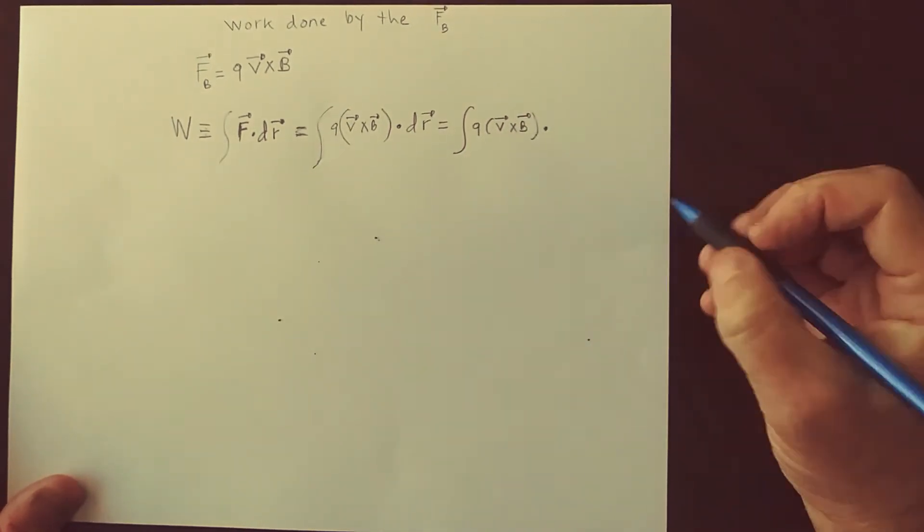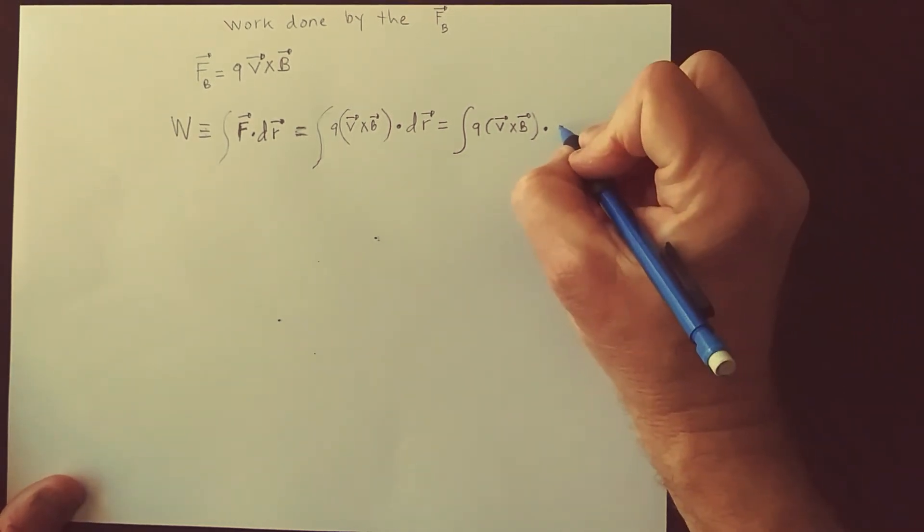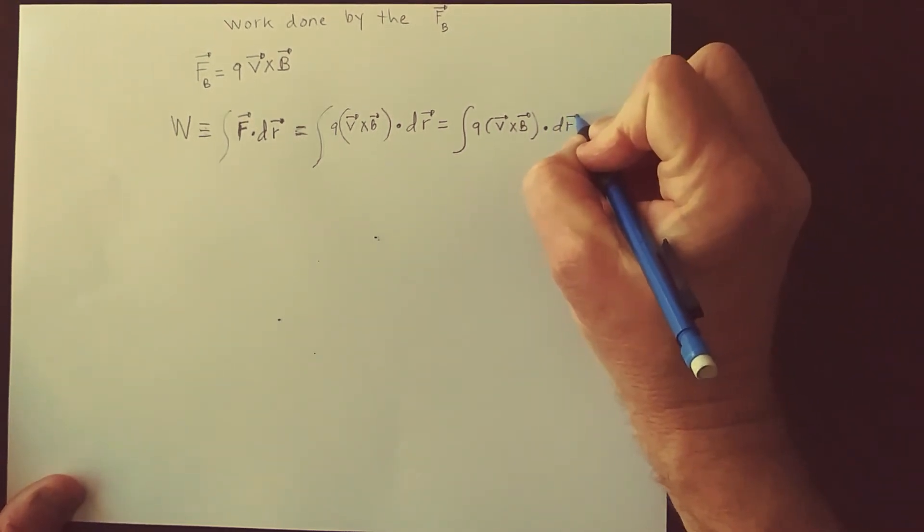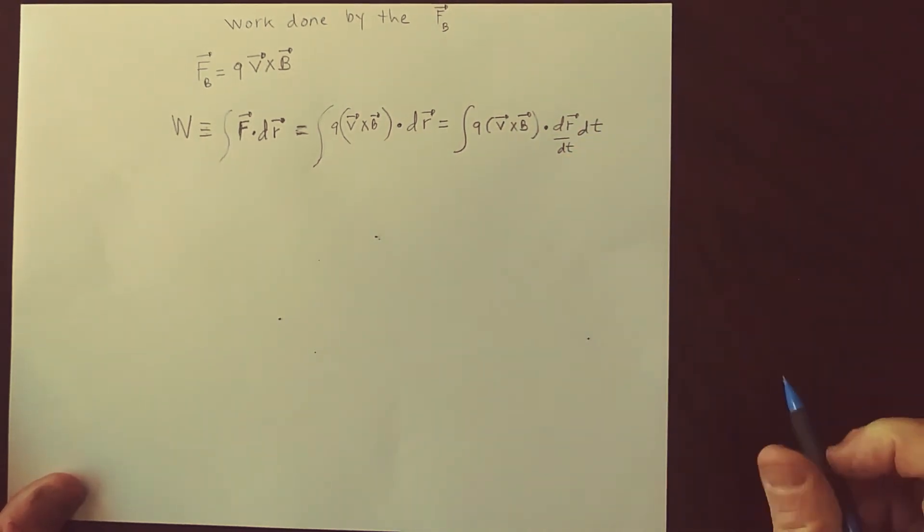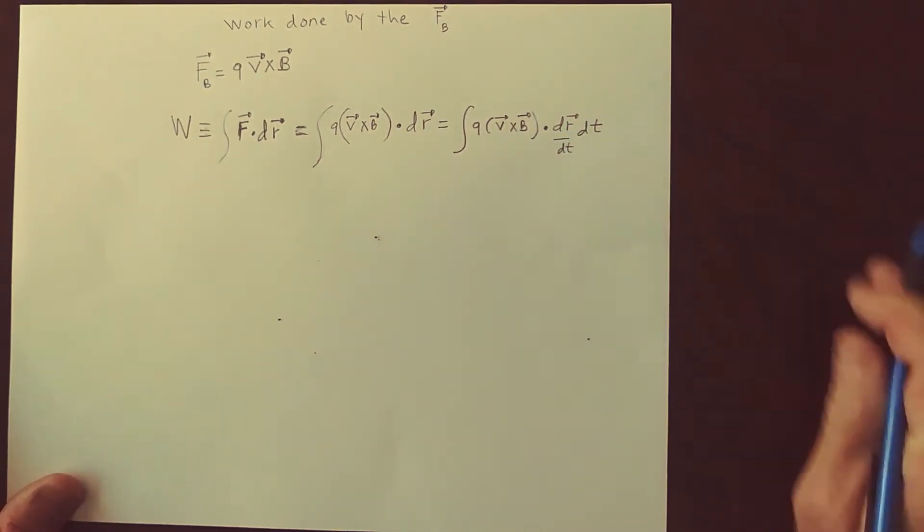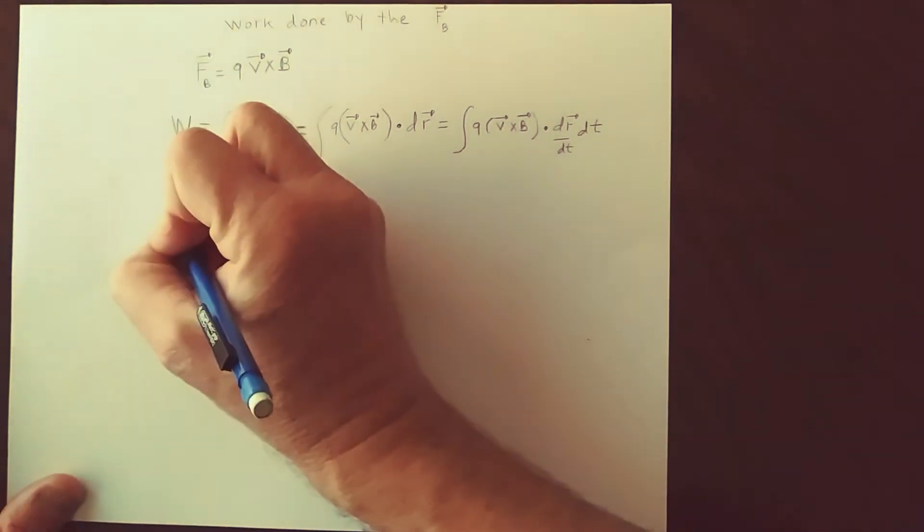I'm going to divide dr by dt and then multiply by dt, and I can see that this quantity here is just the velocity.